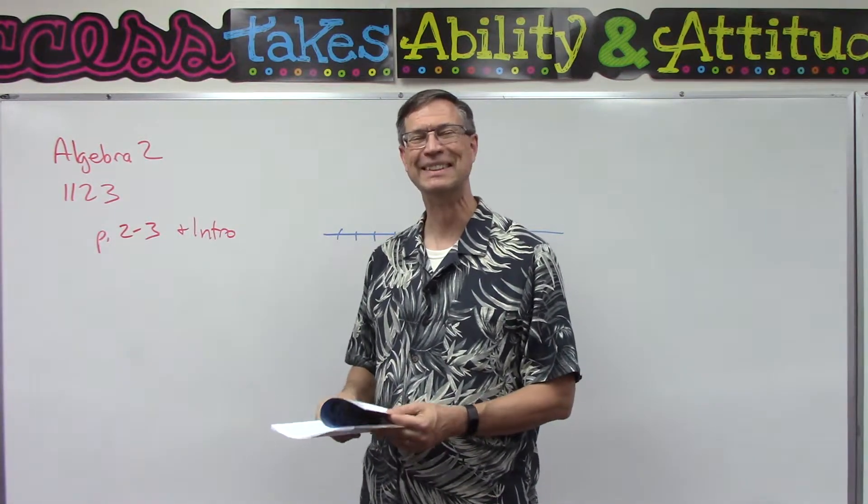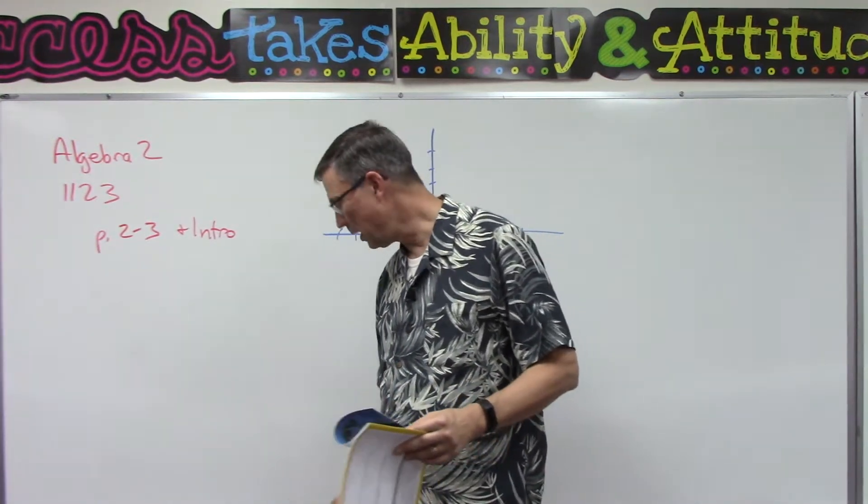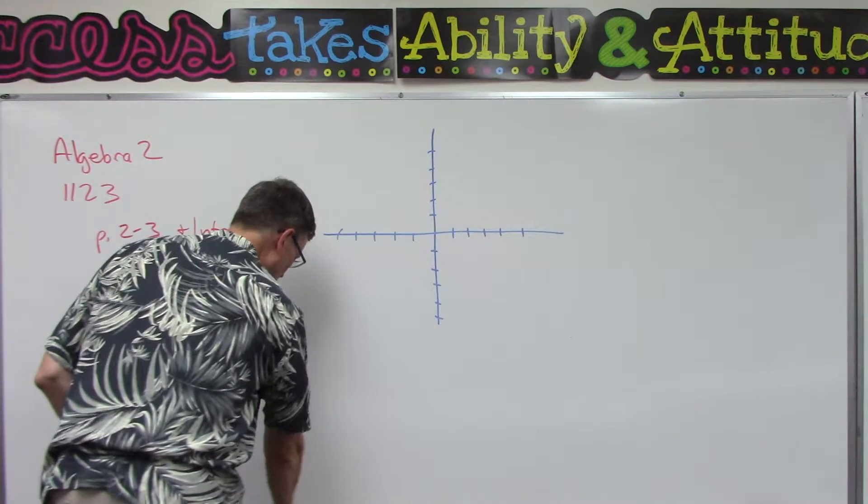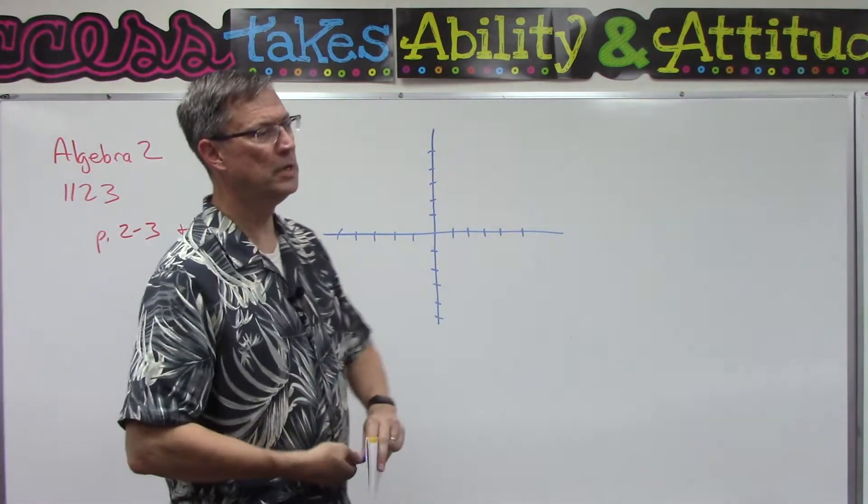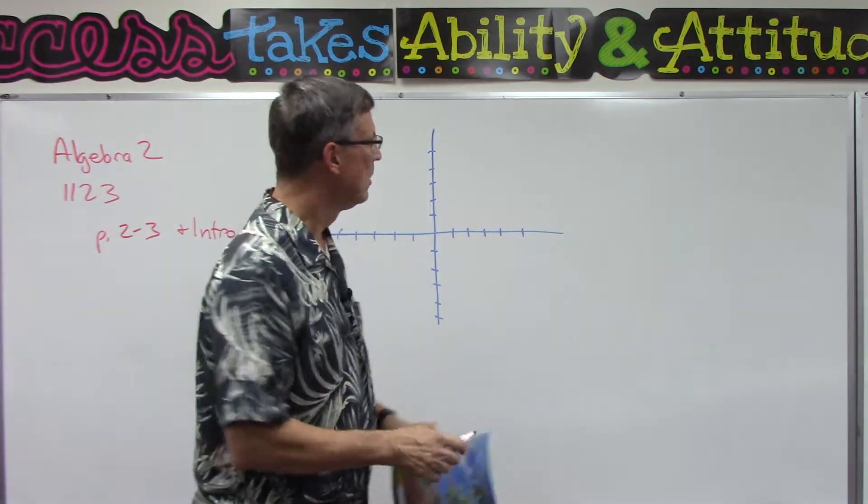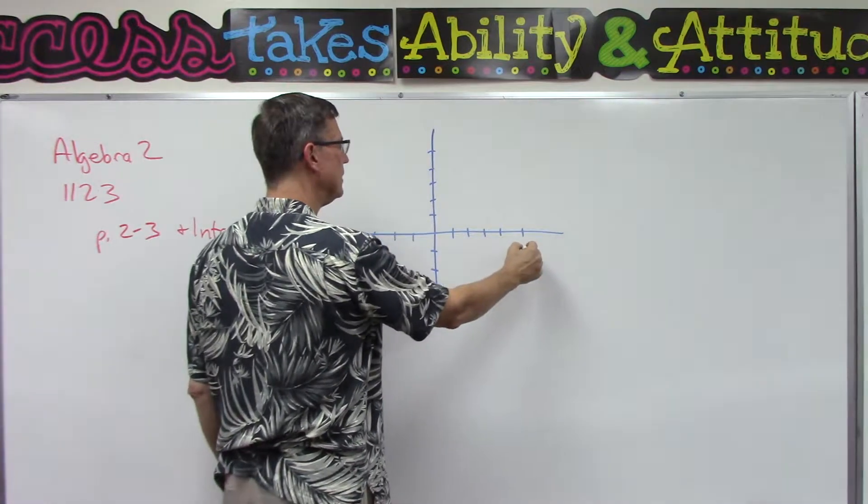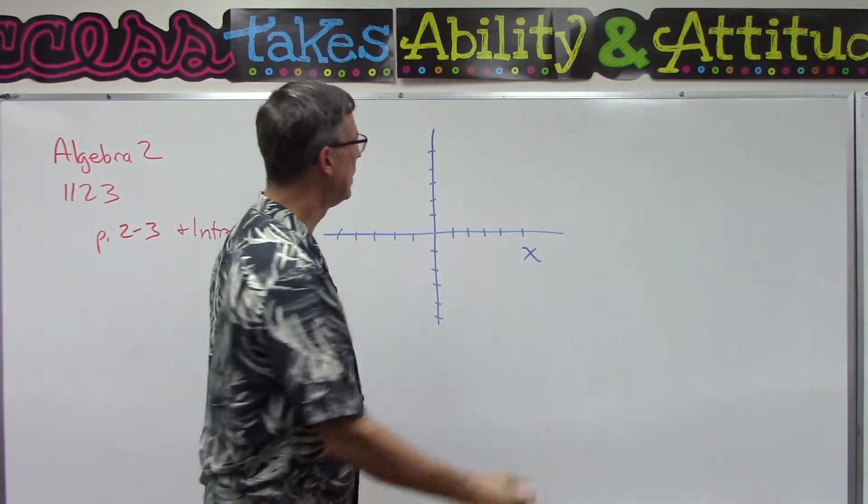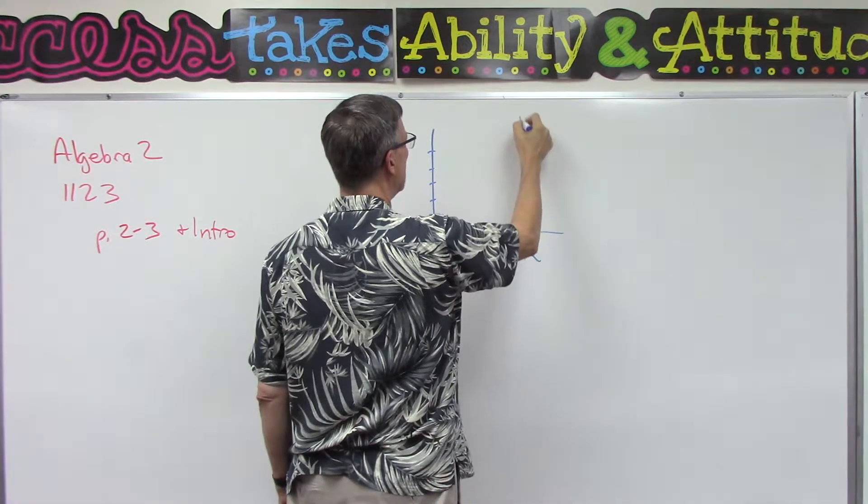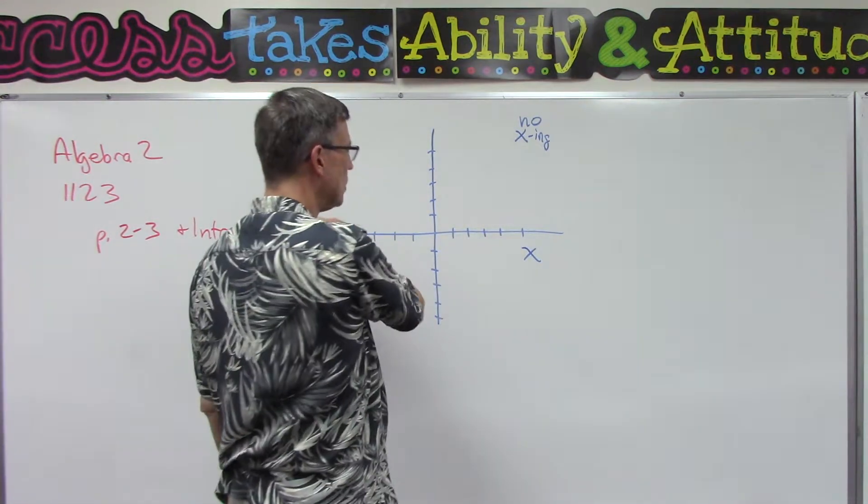Let's talk about graphing linear equations. Even if you did this back in Algebra 1, maybe it was two years ago, and pre-algebra was a while ago, we have two axes. The X axis goes across. Here in the United States, sometimes we'll see a sign that says 'No Xing,' which means no crossing.